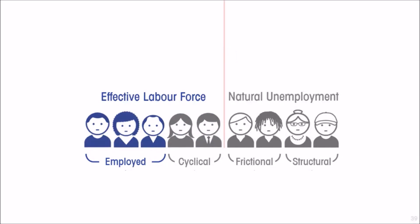It is possible to have less than full employment, in the sense that the demand for labor can be less than even the effective labor force. Under those circumstances, when demand for labor is insufficient to employ all of those who would like a job and are reasonably capable, that slackness — that excess supply of labor in the labor market — is going to force real wages to fall. Over time, in the long run, real wages will fall, and those falling real wages will incentivize businesses to hire more workers.